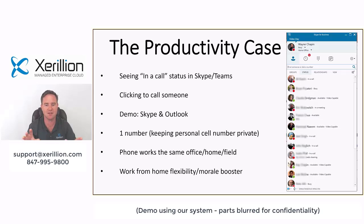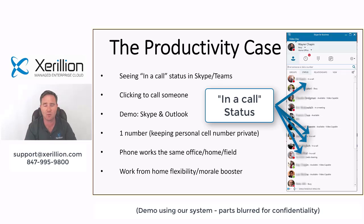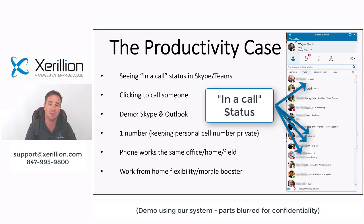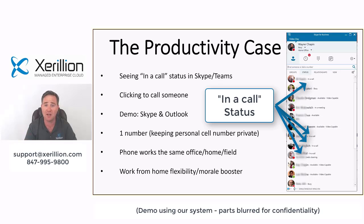The productivity case for the Microsoft phone system really centers around presence — you can go into an app like Skype for Business or Teams and see if somebody's in a meeting, on a conference call, away from their computer, or out of the office. You can quickly see who you work with and whether they're available, then decide how to contact them. When you add the Microsoft phone system, you can also see if someone's in a phone call. If they are, maybe you send them an instant message if it's urgent, or just send an email. Without that visibility, you're going in blind and potentially wasting business cycles.